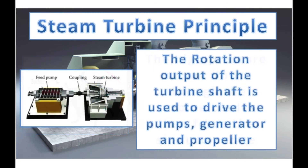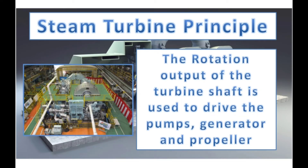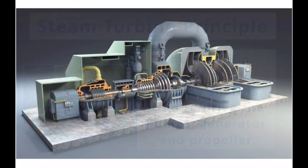The rotating motion output of the steam turbine is used to drive the auxiliary machineries. The turbine is connected to the pump directly by coupling, and for the alternator and propulsion system, the turbine is connected to a reduction gear to reduce the speed from 1000 RPM to 100 or less.